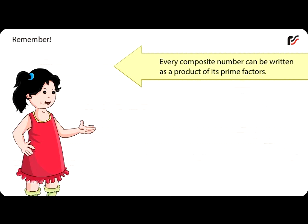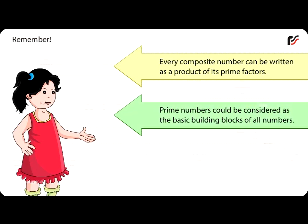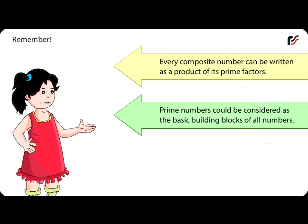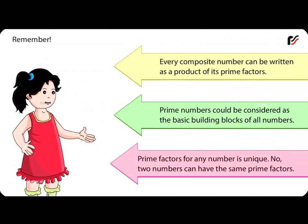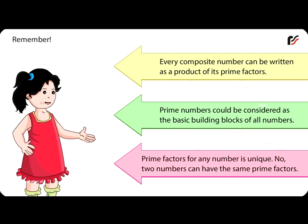Remember, every composite number can be written as a product of its prime factors. Prime numbers could be considered as the basic building blocks of all numbers. Prime factors for any number are unique — no two numbers can have the same prime factors.